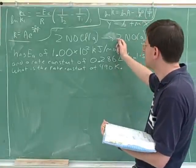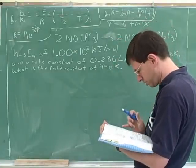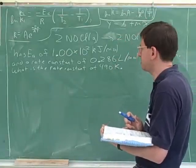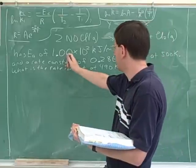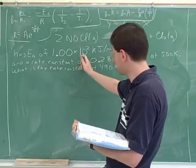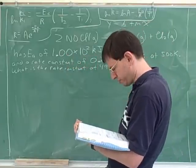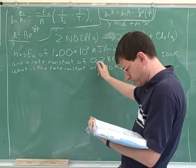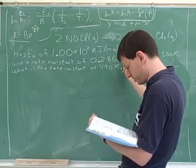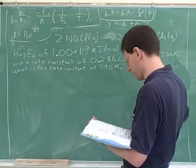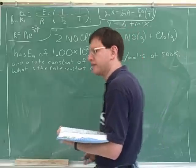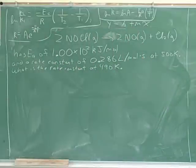This reaction has an activation energy of 1.000 times 10 squared kilojoules per mole and a rate constant of 0.286 meters per mole seconds at 500K. What's the rate constant at 490K? Alright, so let's try to attack this problem on paper.